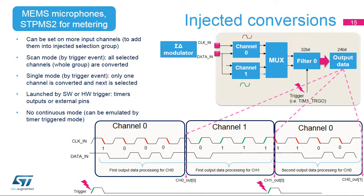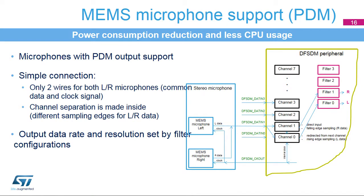The MEMS microphone provides a pulse-density modulated, or PDM, data signal whose format is theoretically like the sigma-delta bit stream. The MEMS microphone has stereo support if two microphones are connected in parallel with common data and clock signals. Rising clock edge samples left audio data and falling clock edge samples right audio data. Implementation into DF-SDM transceivers requires channel 0 to use redirected input from channel 1, and channel 1 to use direct input. Channel data, left versus right, are separated by selecting either the rising or falling edge in the SPI configuration. The clock signal is provided by the DF-SDM clock output because MEMS microphones are slaves and need an external clock.